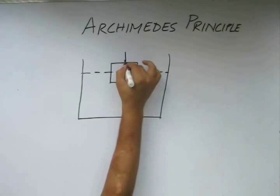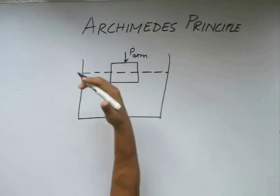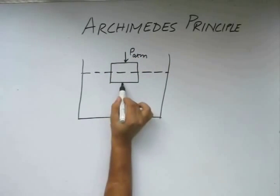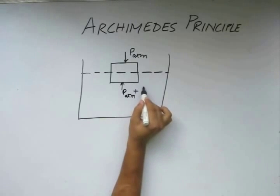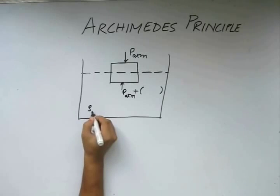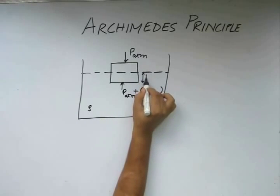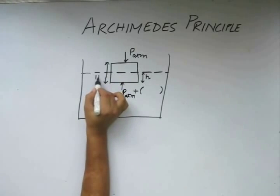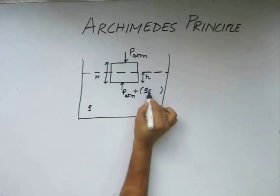We again have the atmospheric pressure acting here. Note that there is no liquid above this, hence it is not possible for a liquid which is not there to apply some pressure, hence we will have only P_atm here. We will also have the pressure due to this height of the liquid. Let us say the liquid density is rho, this height is h, and the height of this entire body is H. So the pressure beneath this body is going to be rho times g times h.